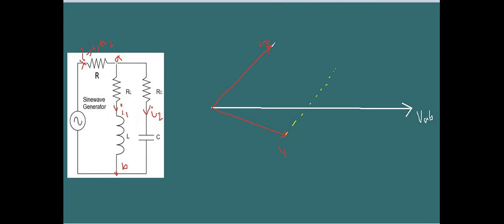For the resultant current I, you have to add I1 and I2 vectorially. This will be the vector sum and it's the resultant current I. In the I2 branch, we have two voltages: VRC and VC. There is no phase difference between VRC and I2, so VRC lies in the same line as I2. This is VRC.